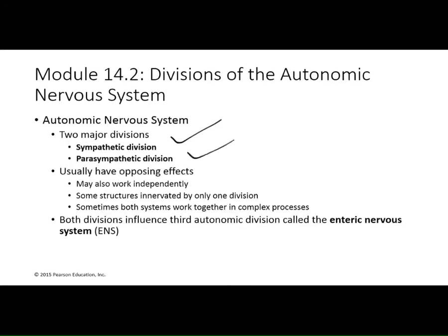We'll also see some tissues innervated by only one or the other division, so while they usually have yin-yang effects, that's not always true. I'll also mention the enteric nervous system, which is really a third division of the autonomic nervous system — the nerve endings in your intestines. In fact, you have more neurons in your gut than in your brain. We'll talk more about the enteric nervous system as we go.